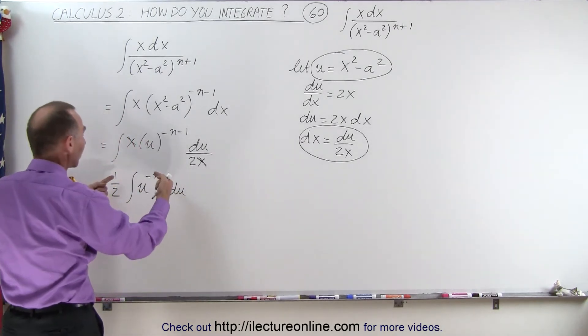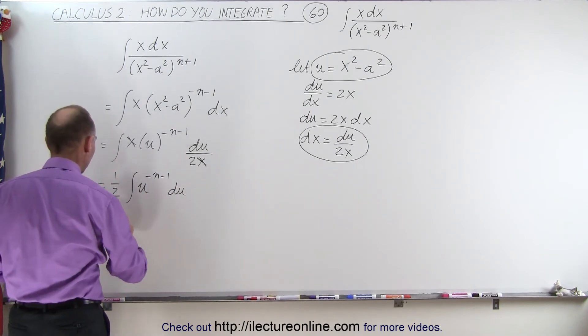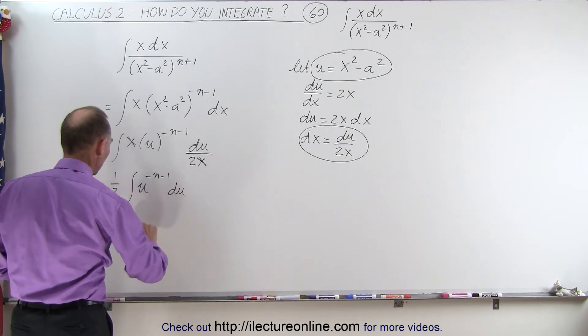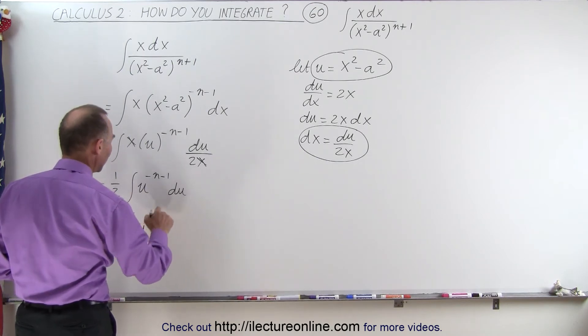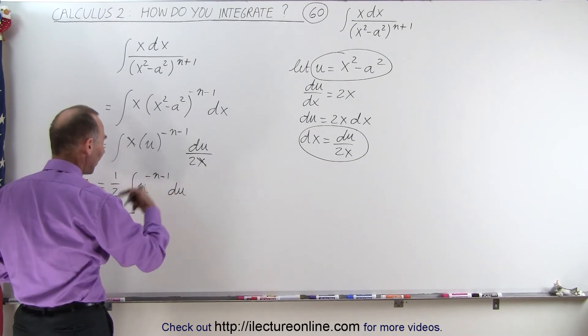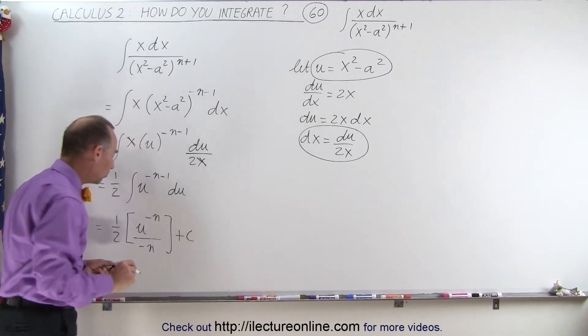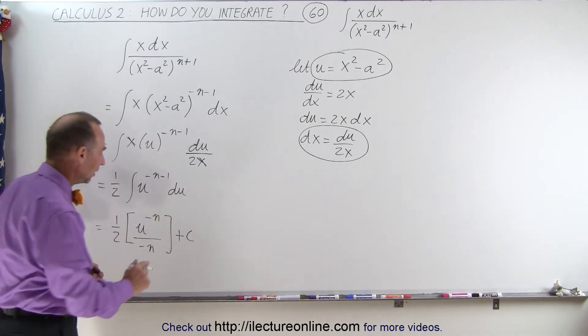The way that's done, we simply add one to the exponent and divide by the new exponent, so this becomes equal to 1 half times u to the minus n, because minus n minus 1 plus 1 is simply minus n, divided by the new exponent, which is minus n, plus a constant of integration.